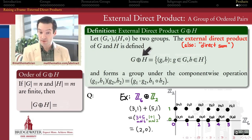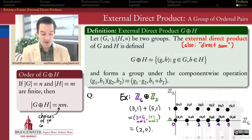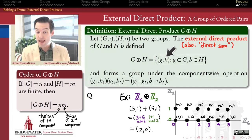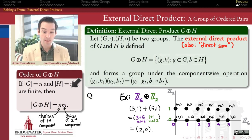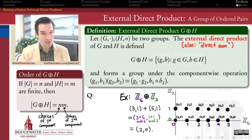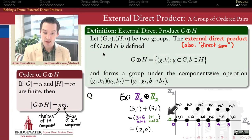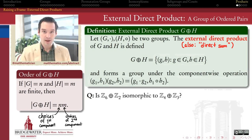Because of how we construct the elements of the direct product, we have as many elements as in the Cartesian product of the sets G and H. If G has order n and H has order m, we have n choices for the first component and m choices for the second. So the order of the external direct product is just the product of the orders — that's probably where we get the word 'product' for this construction. For example, Z6 had 6 elements and Z2 had 2 elements, so their external direct product has 12 elements.